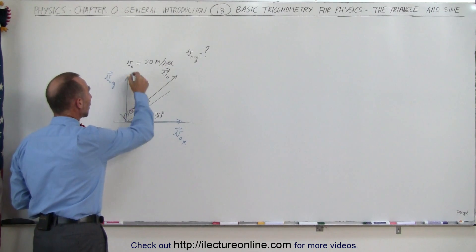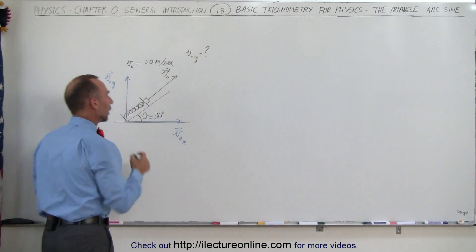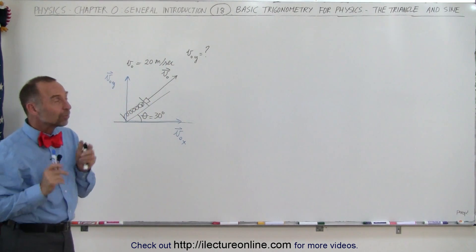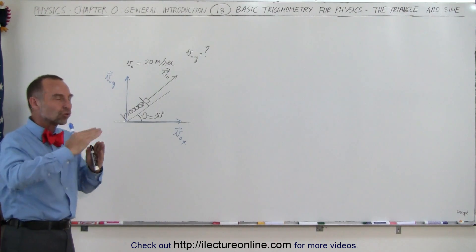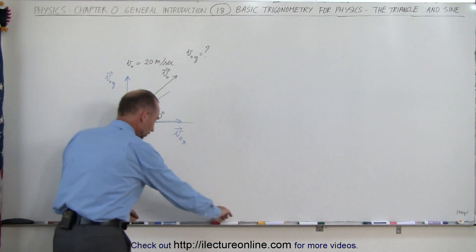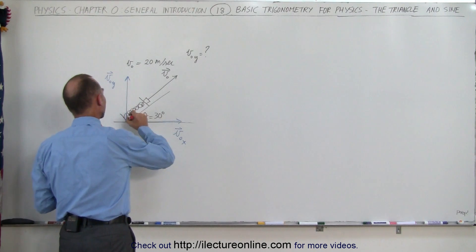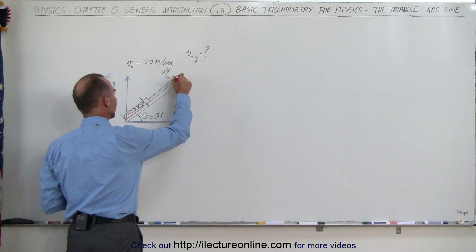And so we want to find the magnitude of this component right here. So what it always comes down to is you have to find or identify a triangle. So let's use a different color here. So I'm going to look at this triangle right here. There's my triangle.